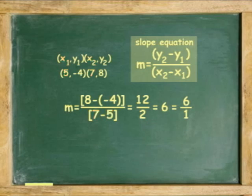Solving the equation, 8 minus -4 equals 12 over 7 minus 5 equals 2. 12 divided by 2 equals 6. The slope is 6. Every time y changes 6, x changes 1.